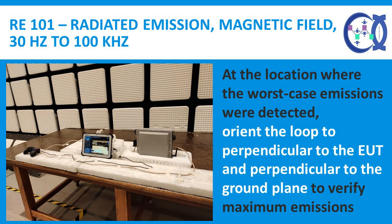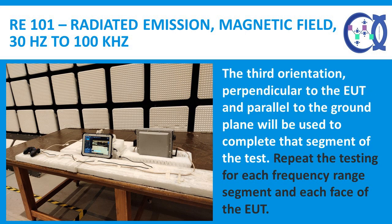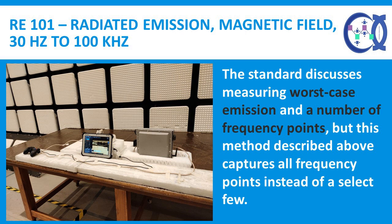While observing the receiver display, move the loop antenna over the EUT face maintaining the 7 cm spacing. At the location where the worst-case emissions are detected, orient the loop perpendicular to the EUT and perpendicular to the ground plane to verify maximum emissions. The third orientation — perpendicular to the EUT and parallel to the ground plane — is used to complete that segment of the test. Repeat testing for each frequency range segment and each face of the EUT, capturing all frequency points rather than a select few.